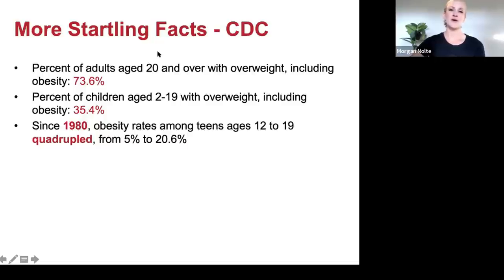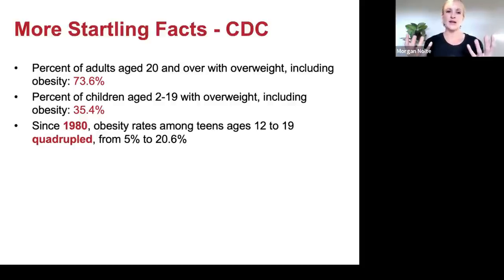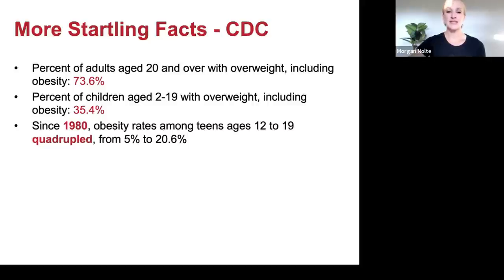Some more startling facts: up until now I've only been speaking of obesity, but when you combine overweight and obesity, more than seven out of every ten American adults over age 20 have either overweight or obesity. When talking about children, the percentage of children aged 2 to 19 with overweight including obesity is 35.4% — over three out of every ten children now have a metabolic disadvantage.